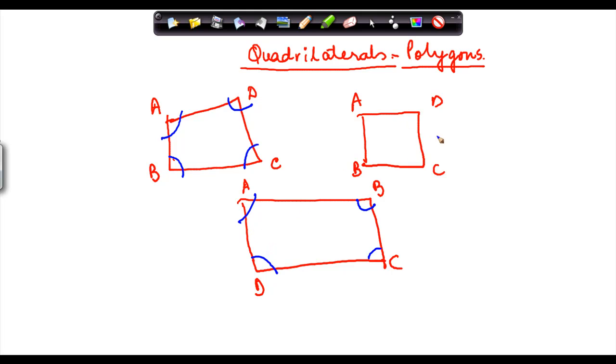Now even a square is a quadrilateral. This is a square, this is a rectangle. Both of them are quadrilaterals. So in a square or a quadrilateral there are four sides, there are four angles.